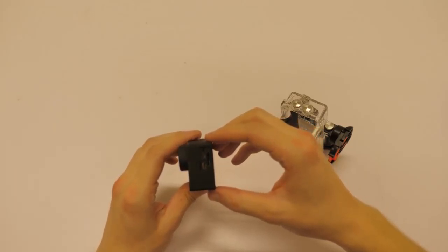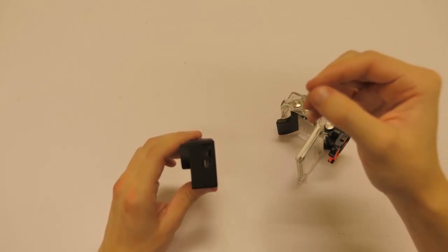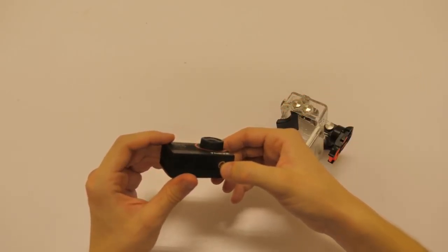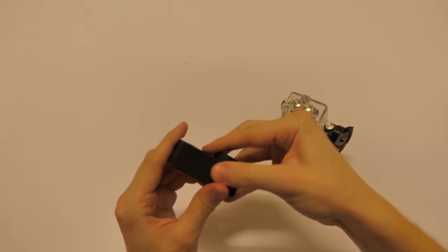And then on the top we have this WiFi button which is also the button to begin shooting. Then along the side we have the micro SD card slot and also the two ports for micro USB and HDMI.